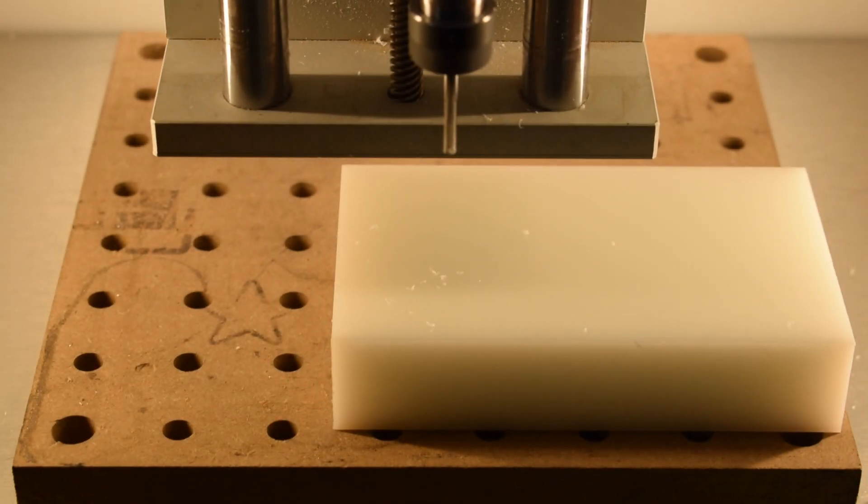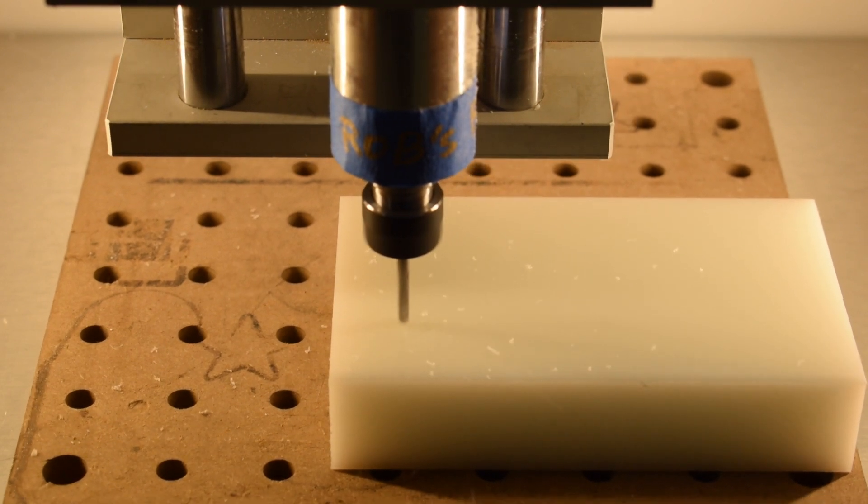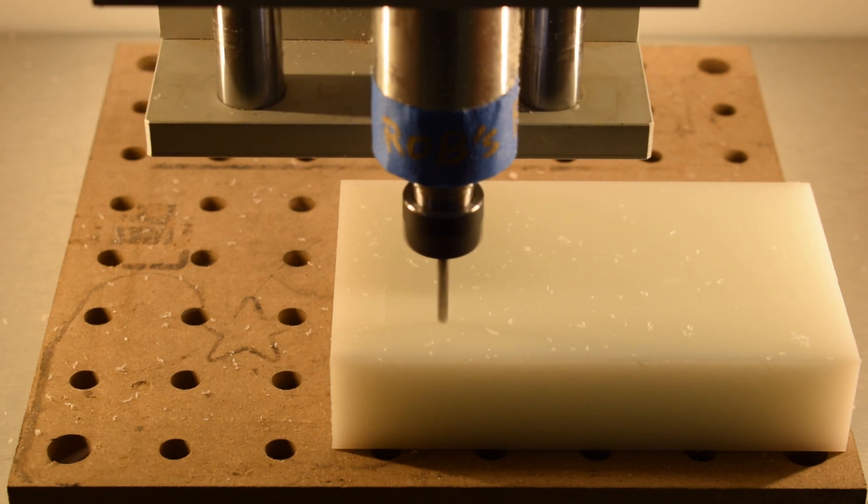Hey guys, Winston at Carbide3D here. High-density polyethylene or HDPE is a super common plastic that's fairly inert from a chemical standpoint and really easy to machine.